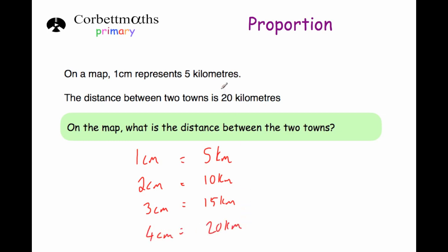There's a quicker way: if we take 20 kilometres and divide it by five, we get four centimetres. So the answer is four centimetres. You can work it out by continuing the scale pattern, or by dividing or multiplying. Since five kilometres equals one centimetre, we do 20 divided by five to find how many centimetres the 20 kilometres would be.